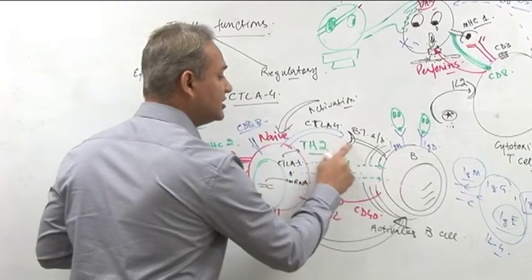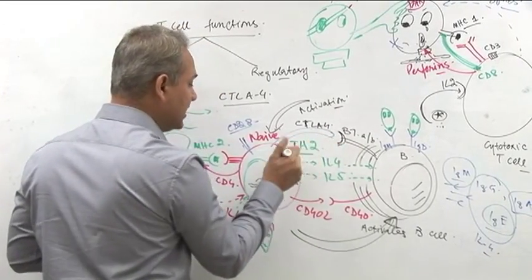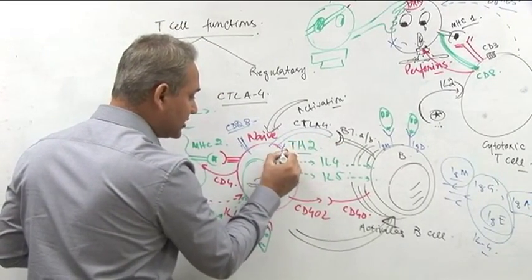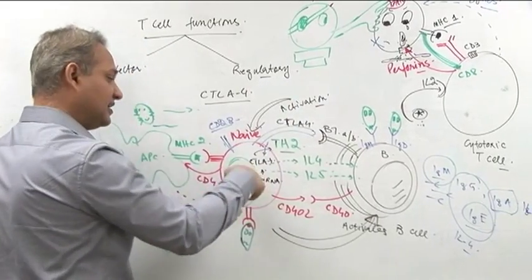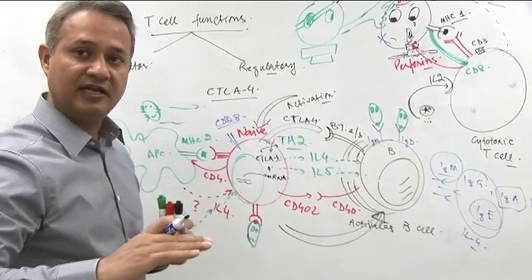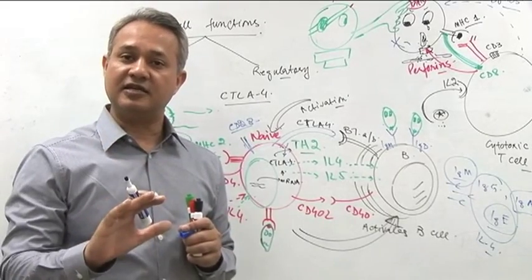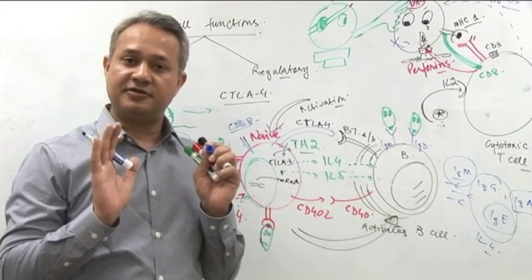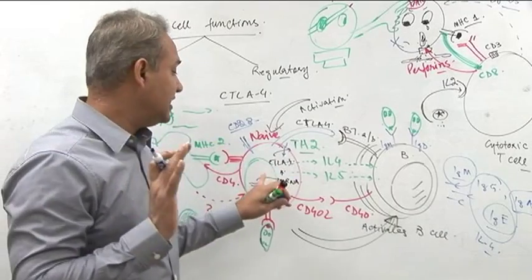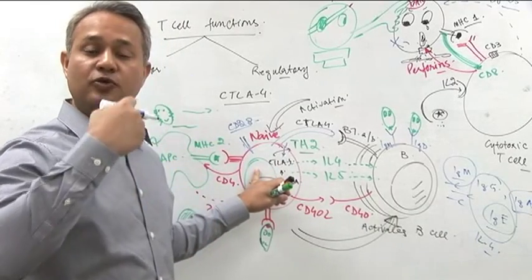Once the CTLA-4 is connected with the B7, that causes a down drag, that causes a signal inside the T-cell and that stops the T-cell from its function. It makes it quiet again.